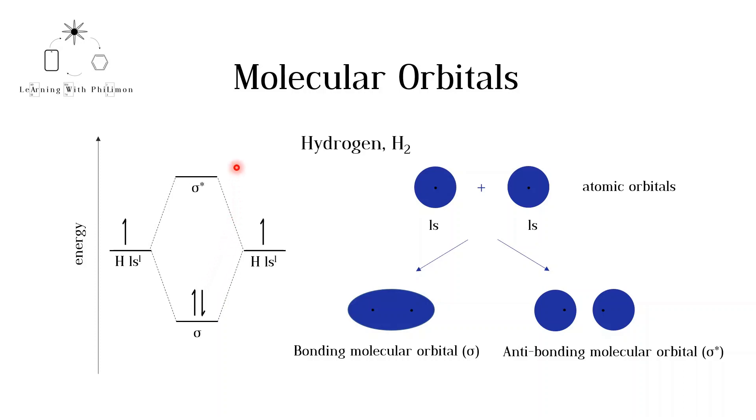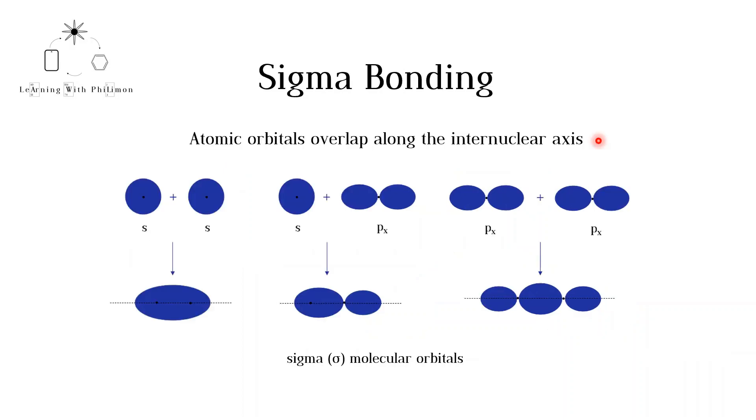These diagrams get more complicated when there are more atomic orbitals occupied with electrons. Check the link in the description for more. Let's now look at how other atomic orbitals can combine. Sigma bonding is when atomic orbitals overlap along the internuclear axis. In the previous slide, we saw that two s orbitals can combine along the internuclear axis, the axis through the two nuclei denoted by the dotted line, to form a molecular orbital.